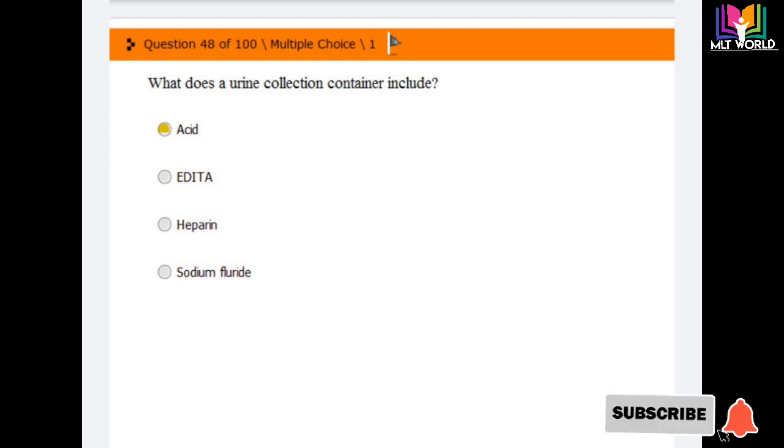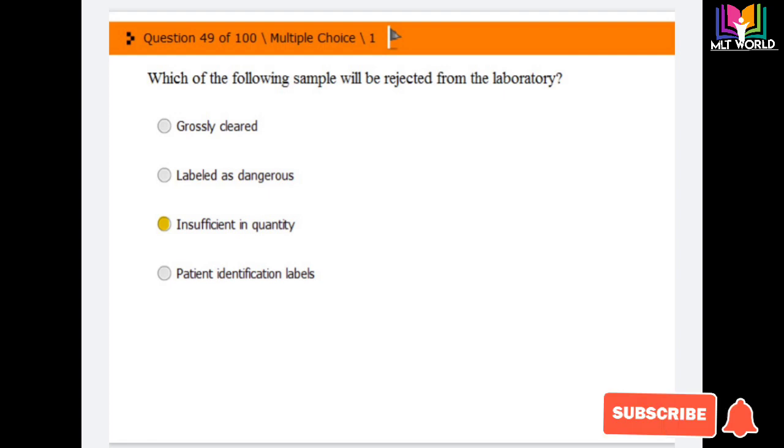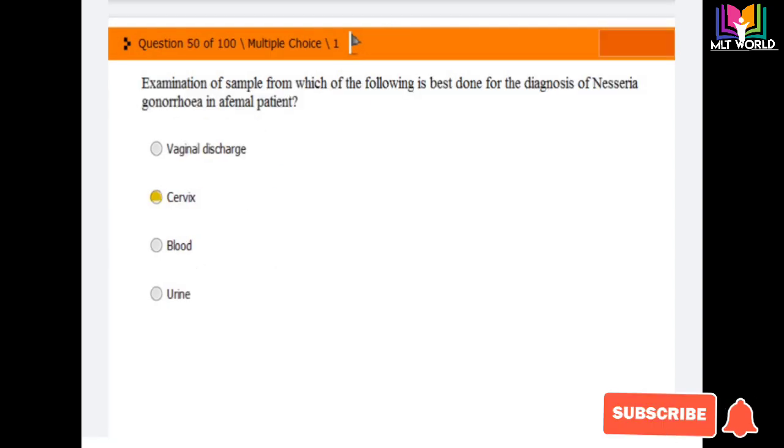Question number 49: Which of the following samples will be rejected from the laboratory? Options are glass, grossly cleared, labeled as dangerous, insufficient in quantity, patient identification labels. The correct answer is insufficient in quantity.